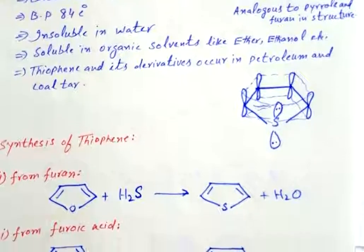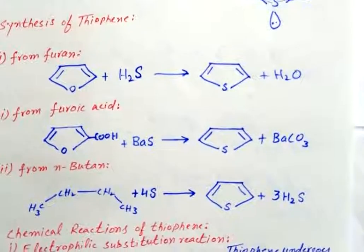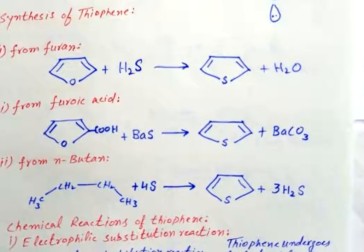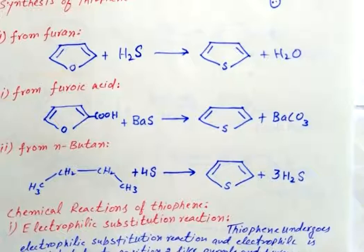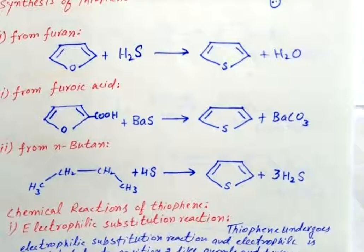Now we will discuss different synthetic routes for the synthesis of thiophene. In the first method, thiophene can be prepared by treating furan with H2S gas. In the second method, thiophene can be prepared by treating succinic acid with barium sulfide, producing thiophene and barium carbonate as products.